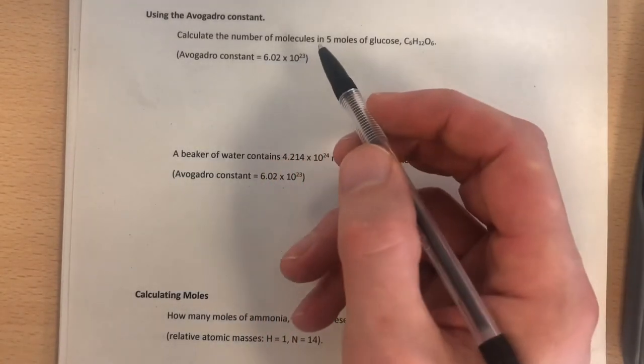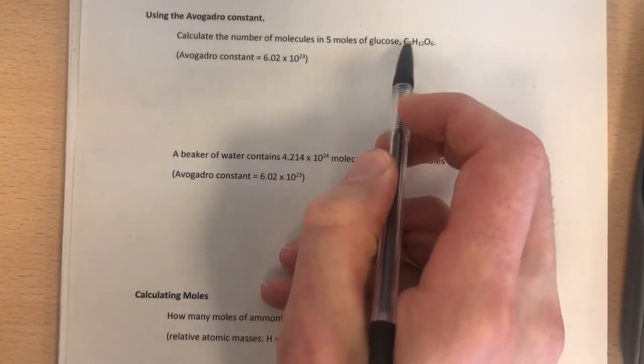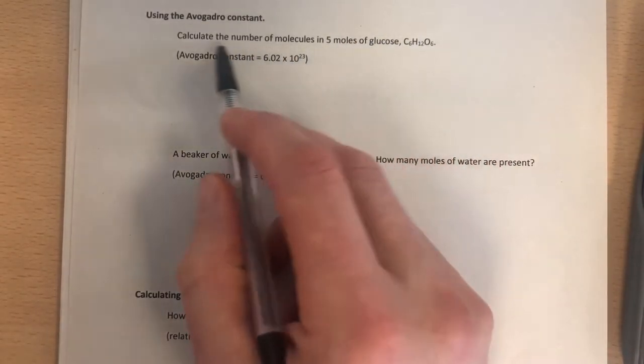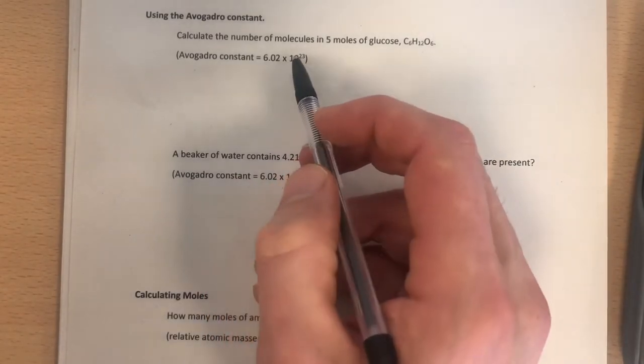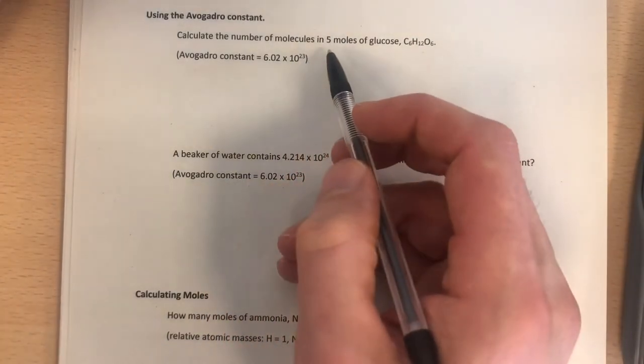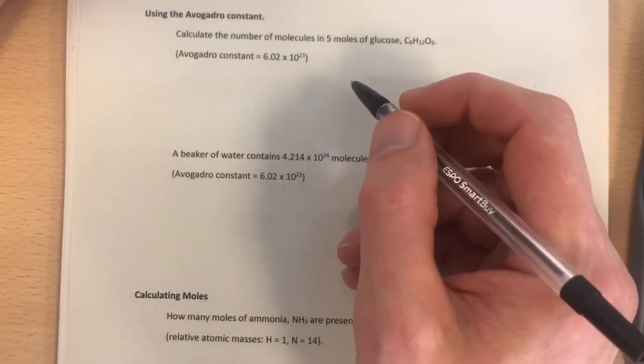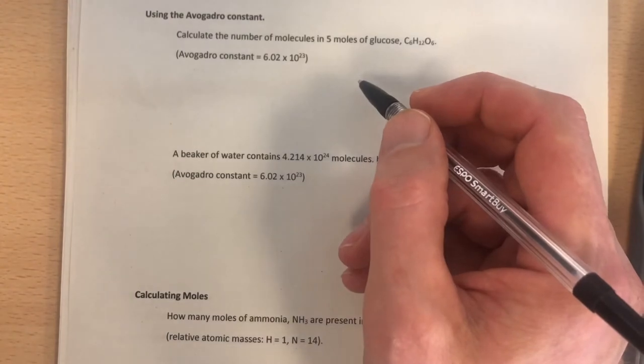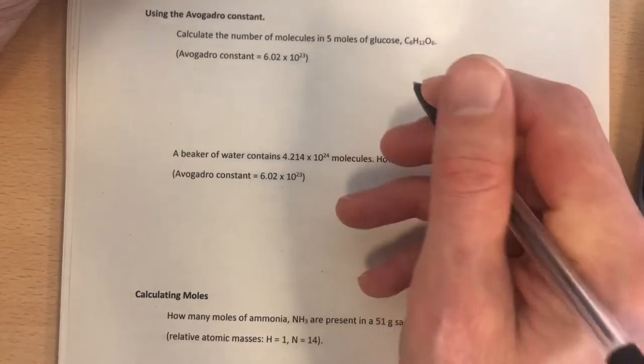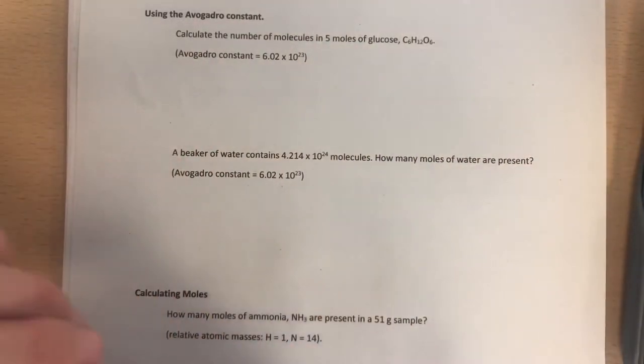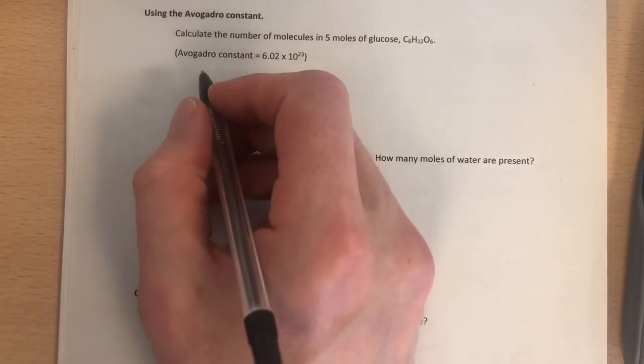Now, what we have to do here is, in this question, calculate the number of molecules in 5 moles of glucose. This is glucose here. Well, the Avogadro constant is the number of particles in one mole. So if I said to you, how many eggs do you have if you have 5 dozen eggs, hopefully you'd say to me 60. The maths you've done is you've taken the dozen or the constant and multiplied it by 5. And that's what we're going to do here.